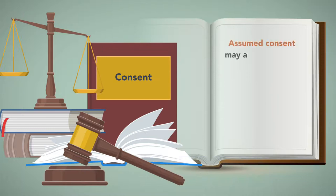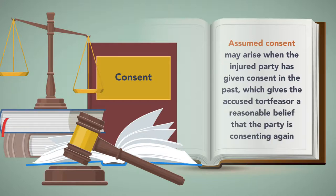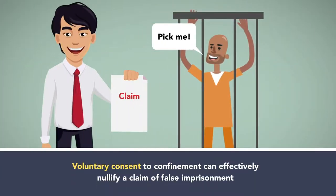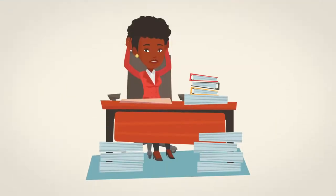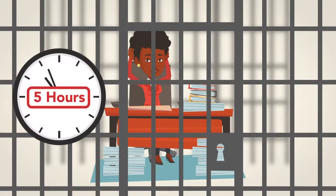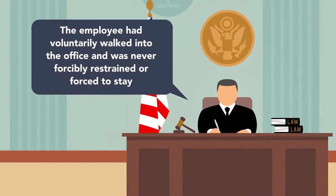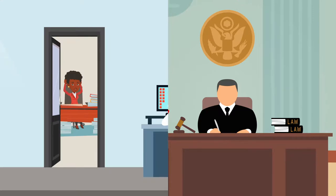Assumed consent may arise when the injured party has given consent in the past, which gives the accused tortfeasor a reasonable belief that the party is consenting again. Another type of consent defense deals with the tort of false imprisonment, which involves the restraining or confinement of a person. Voluntary consent to confinement can effectively nullify a claim of false imprisonment. Hannah v. Marshall Field & Co., an Illinois case, involved an employee who claimed that her employer falsely imprisoned her in an office for five hours. The appeals court affirmed the trial court's summary judgment, pointing to the fact that the employee had voluntarily walked into the office, was never forcibly restrained, the door was never locked, and the employee was never threatened with harm if she left.